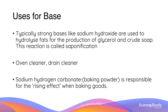What are the uses for bases? Well, typically we use strong bases like sodium hydroxide to hydrolyze fats for the production of glycerol and crude soap — and we call that saponification. We also use bases in oven and drain cleaners. Sodium hydrogen carbonate, which we know as baking powder, is responsible for the rising effect in baking goods.